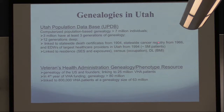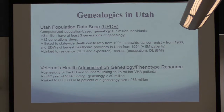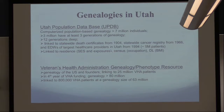That's an awesome resource by itself, but it's been linked to statewide death certificates from 1904, statewide cancer data from 1966, and the EDWs of the two big healthcare providers in Utah from around 1994. So it's phenotype heaven for someone who wants to study the heritable patterns of diseases — you've got people's genetic relationships and you can establish phenotypes from all this linked data.